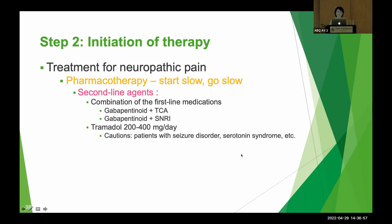Moving to second-line agents: combination therapy of first-line medications — gabapentinoid (gabapentin or pregabalin) plus TCA, or gabapentinoid plus SNRI. Also tramadol at 200–400 mg per day. It is important to avoid tramadol in patients with seizure disorder, as it decreases the seizure threshold. Tramadol can also increase the risk of serotonin syndrome, especially if the patient is on an SNRI or SSRI.